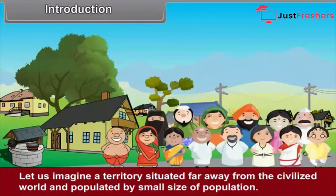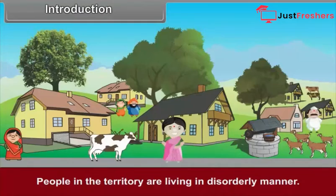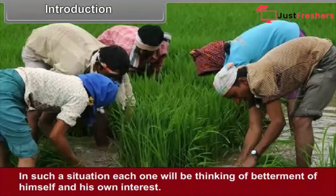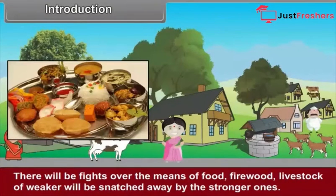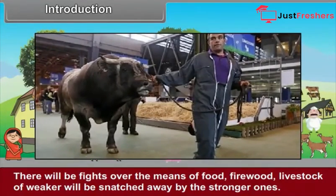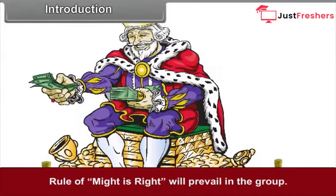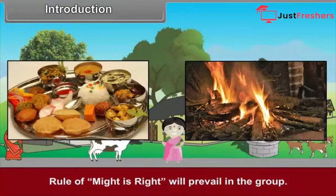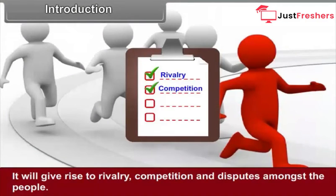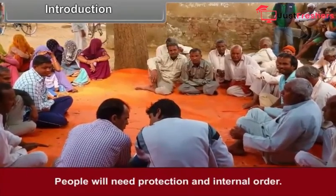Let us imagine a territory situated far away from the civilized world and populated by a small size of population. People in the territory are living in a disorderly manner. Each one will be thinking of betterment of himself and his own interests. There will be fights over the means of food and firewood. Livestock of weaker ones will be snatched away by the stronger ones. Rule of might is right will prevail in the group. Conflicting interests will make everyone suffer, giving rise to rivalry, competition and disputes amongst the people.